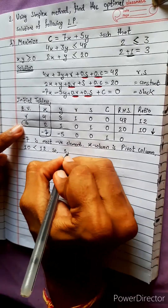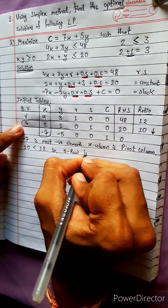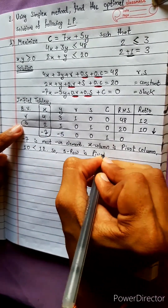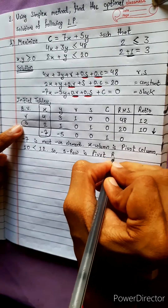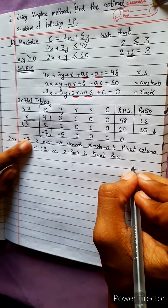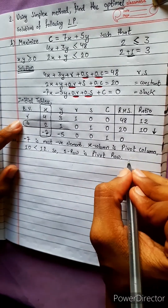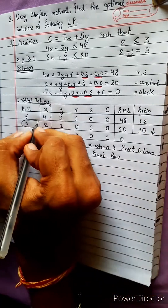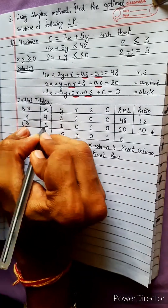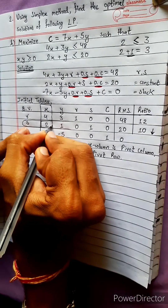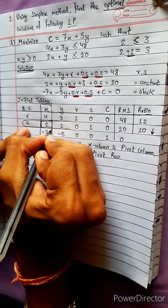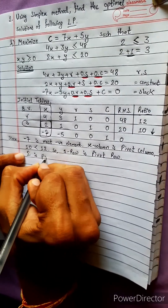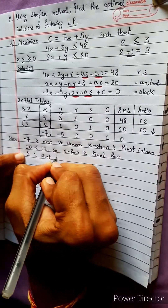So the S row is the pivot row. The pivot element is at the intersection of the pivot column and pivot row. Two is the pivot element.